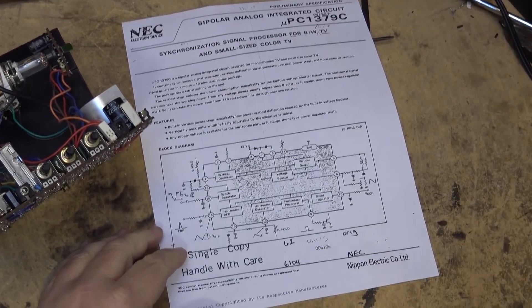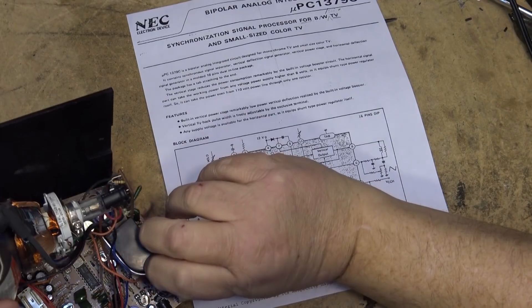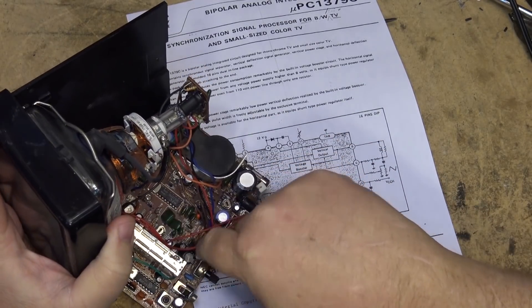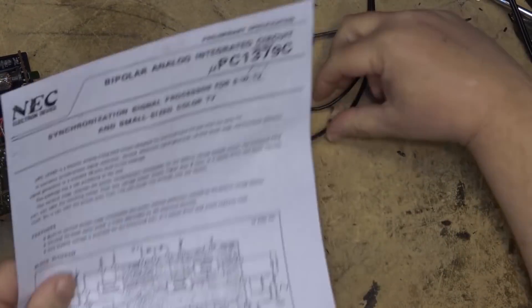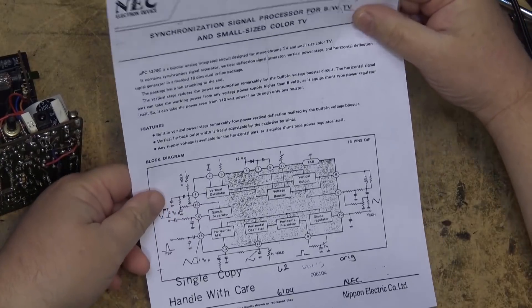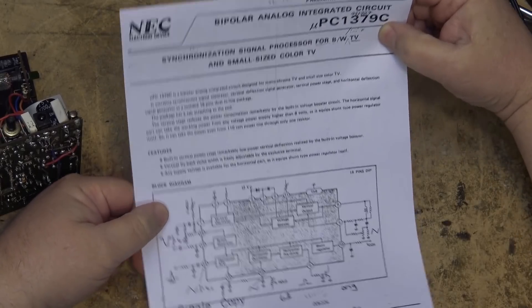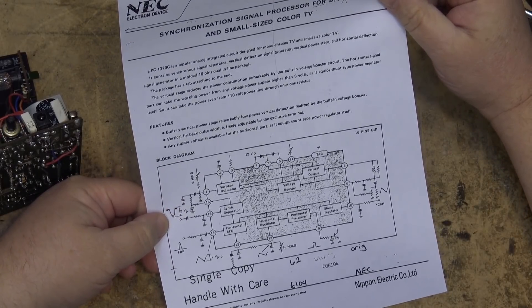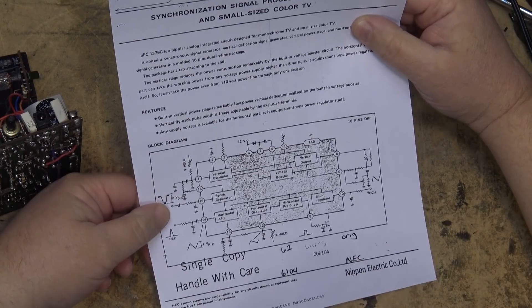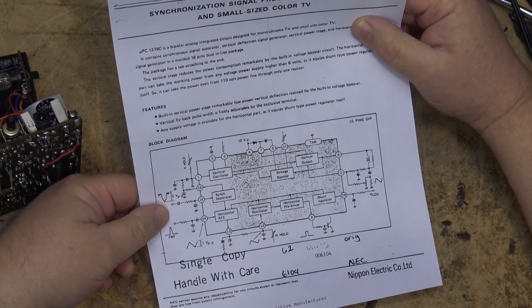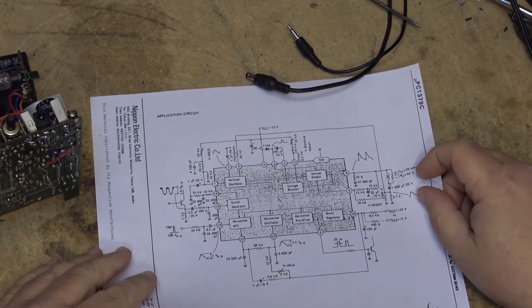This set is based on the NEC UPC-1379C, and that's the chip right there. This is a single chip solution that delivers all of the synchronizing signals and drive signals through one chip. I found this copy of the IC online and it's quite interesting because this set can operate off 110 volts with no transformer, just a single resistor, because it has an internal shunt regulator built in.